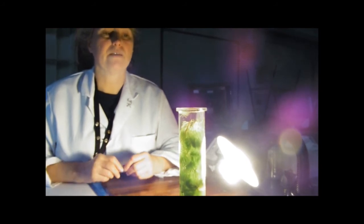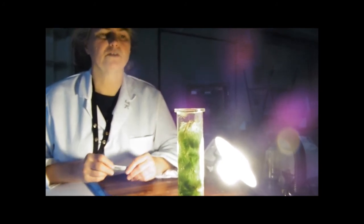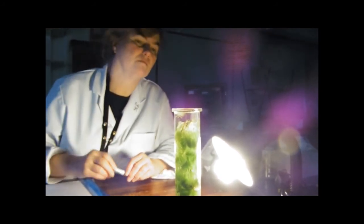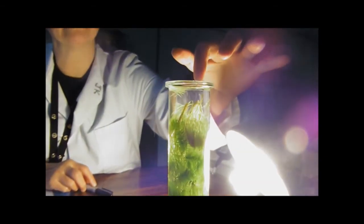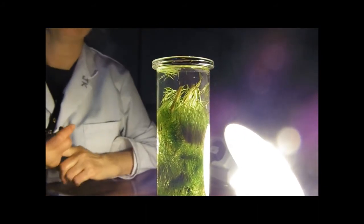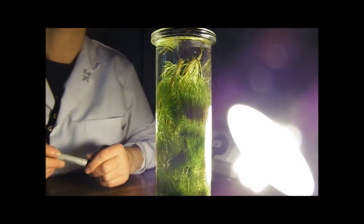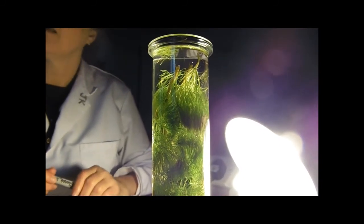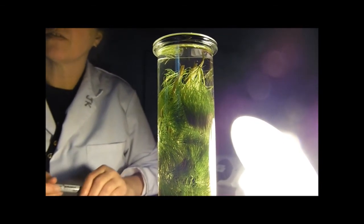But obviously the main thing is the volume of bubbles. You could have loads of little ones. So this one here is producing billions of little bubbles, whereas the one over here is producing bigger bubbles but fewer of them. So that's the evaluation points for that.